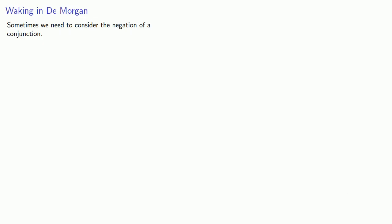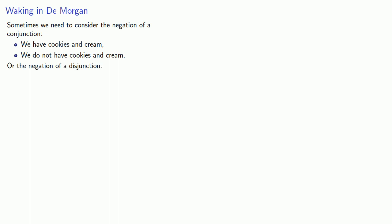Sometimes we need to consider the negation of a conjunction. For example: we have cookies and cream, or we do not have cookies and cream. Or we might need to consider the negation of a disjunction: you can have ice cream or cake, versus you cannot have ice cream or cake. Let's consider what these statements might be logically equivalent to.